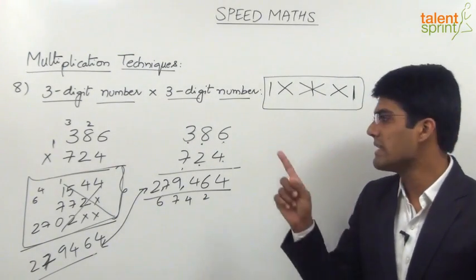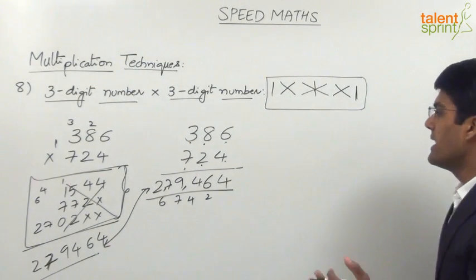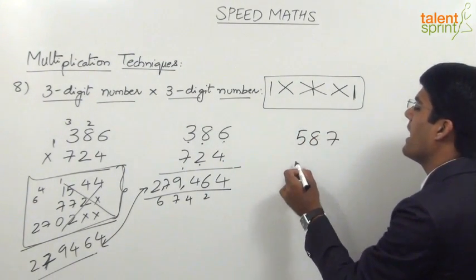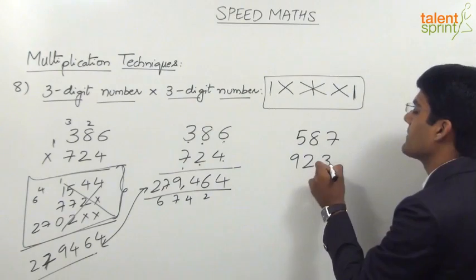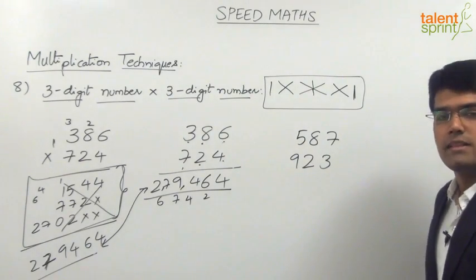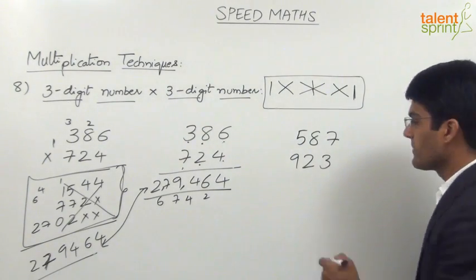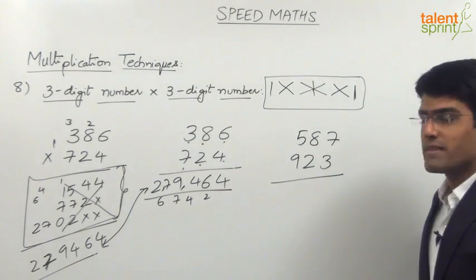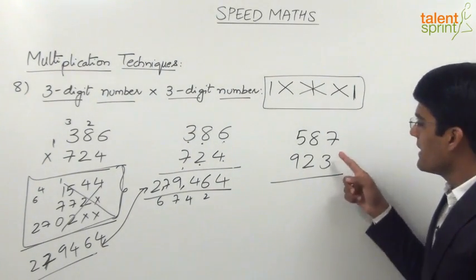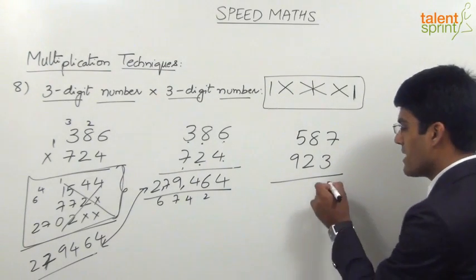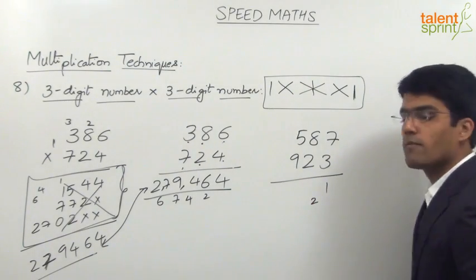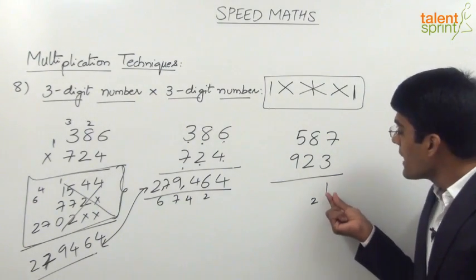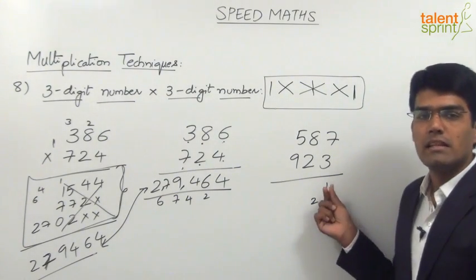Let us take one more example: multiply 587 and 923. The first step is multiplication of unit places: 7 × 3 is 21, so we take 1 in the answer and 2 gets carried forward. Remember, in each step we take only one digit in the answer and the other part gets carried forward.